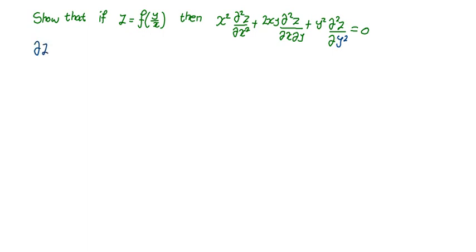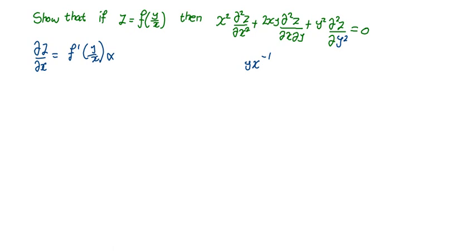First, find the first partial derivative of z with respect to x. Differentiating in general, this is just f prime of (y/x), multiplied by the derivative of what we have inside with respect to x. Since y/x is the same as y·x⁻¹, differentiating gives negative y·x⁻², which is simply −y/x². So the first partial derivative of z with respect to x is −y·f′(y/x) / x².